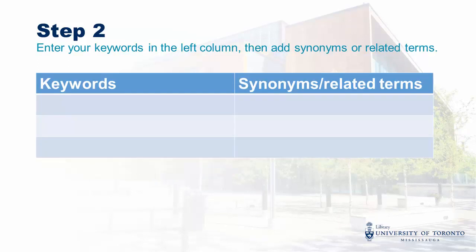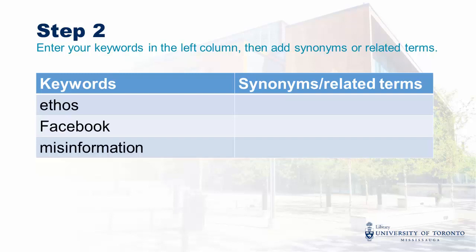Now that we've figured out our keywords, we'll move on to the next step, where we'll list our keywords in the left column and brainstorm some synonyms or related terms. These are important because search systems will not automatically include them. For example, if an article doesn't mention misinformation but does mention fake news, it won't show up in our results.